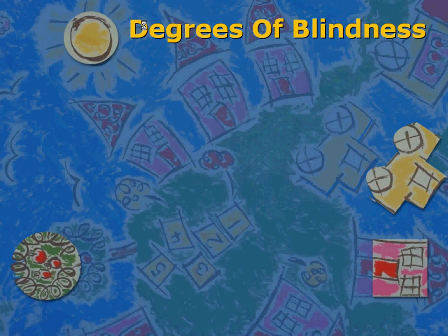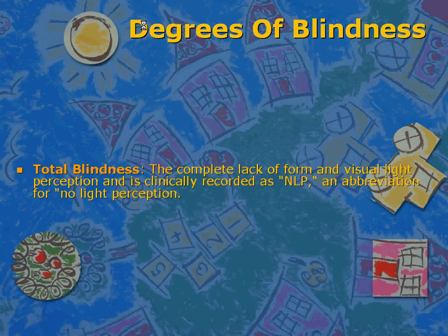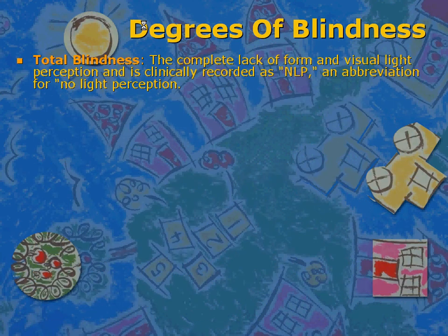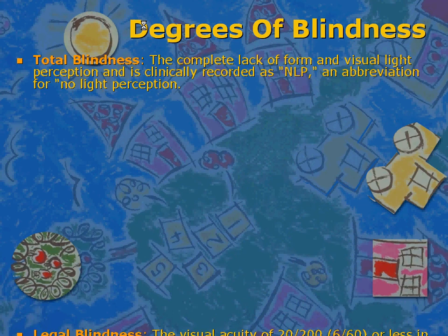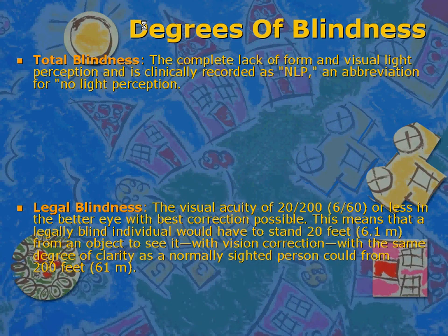There are various degrees of blindness, one being total blindness, which is the complete lack of form in visual light perception and is clinically recorded as NLP, an abbreviation for no light perception.